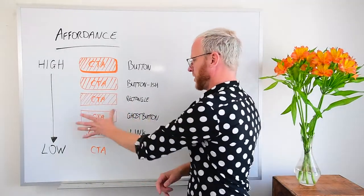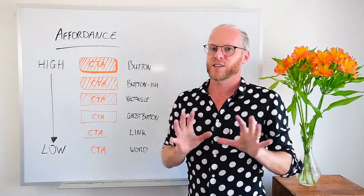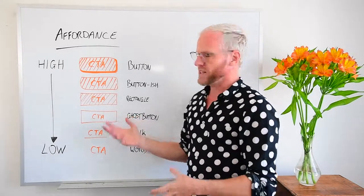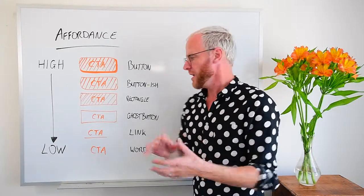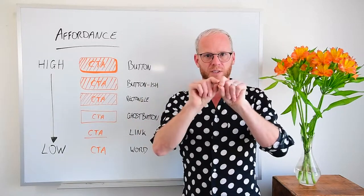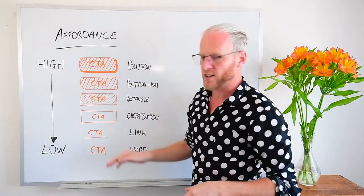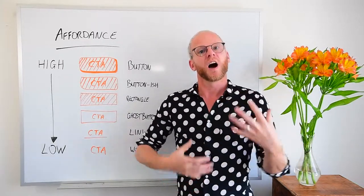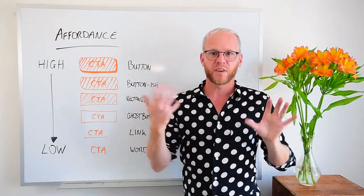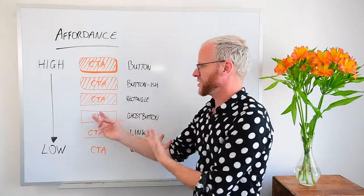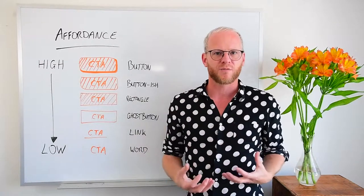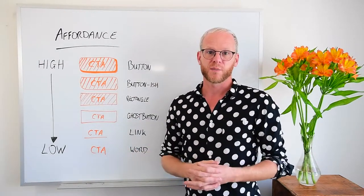Moving further down, we have the ghost button. Very trendy, and design trends are a dangerous thing to copy unless you validate their impact. In this case, you can have a contrast problem with a ghost button because basically the insides are transparent. So all you see is the stroke — the line outside — and the word inside, which is our call to action CTA. If you have a complex background behind your CTA, like an image or a video, that can impact readability because it shows through the button. Ghost buttons look really cool but if they're not used in the right way, they can cause readability problems.